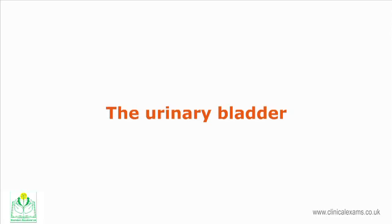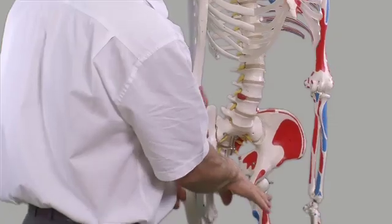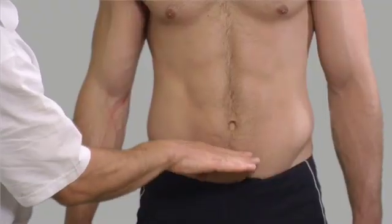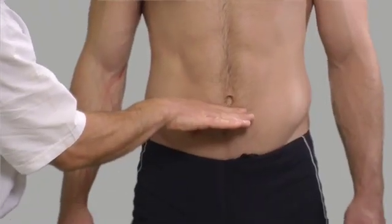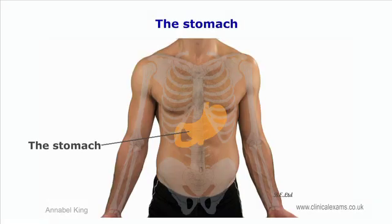The urinary bladder is not normally palpable unless significantly full. It is situated behind the symphysis pubis. When full, it may rise by four centimeters or more above the pubic rami.